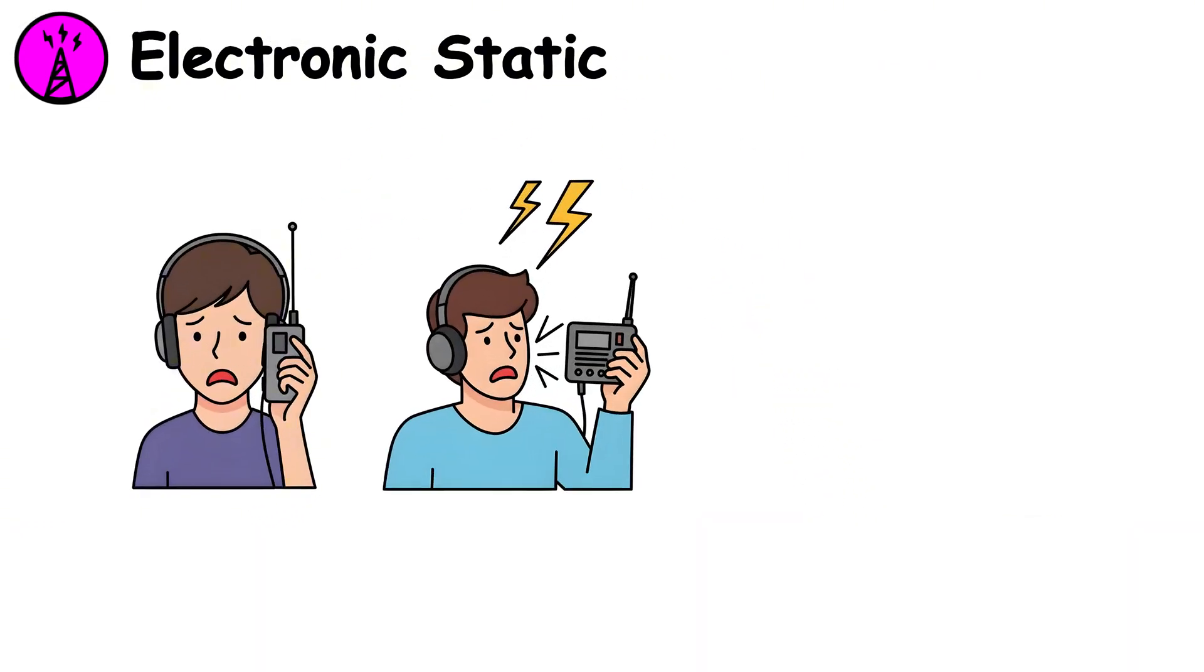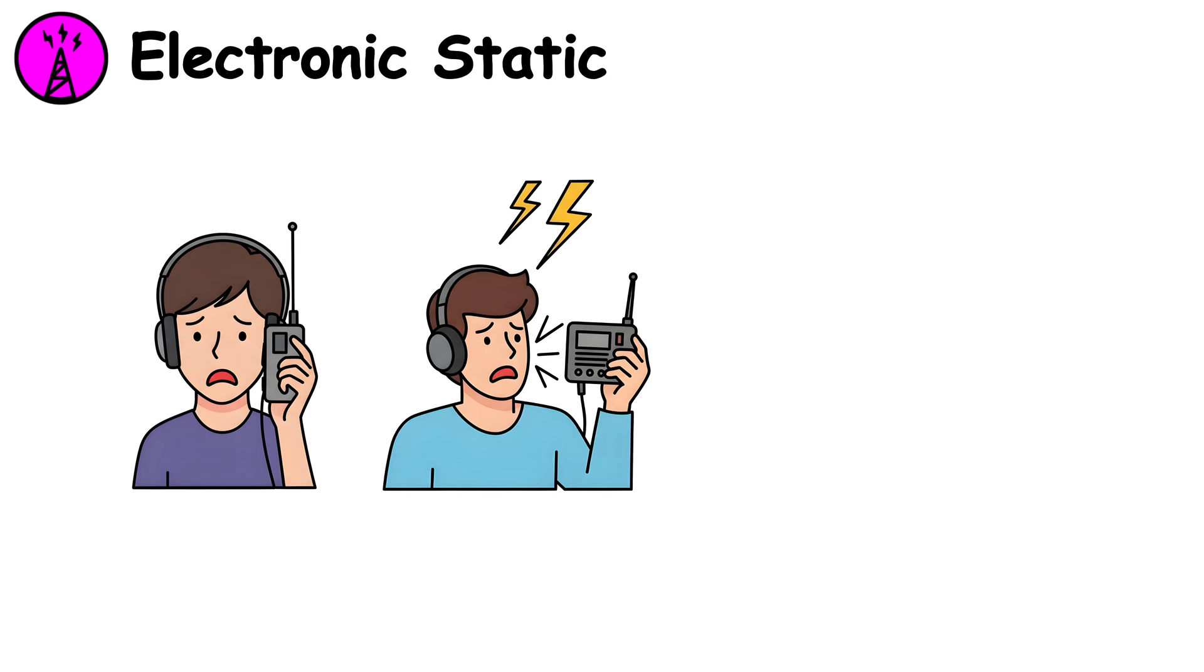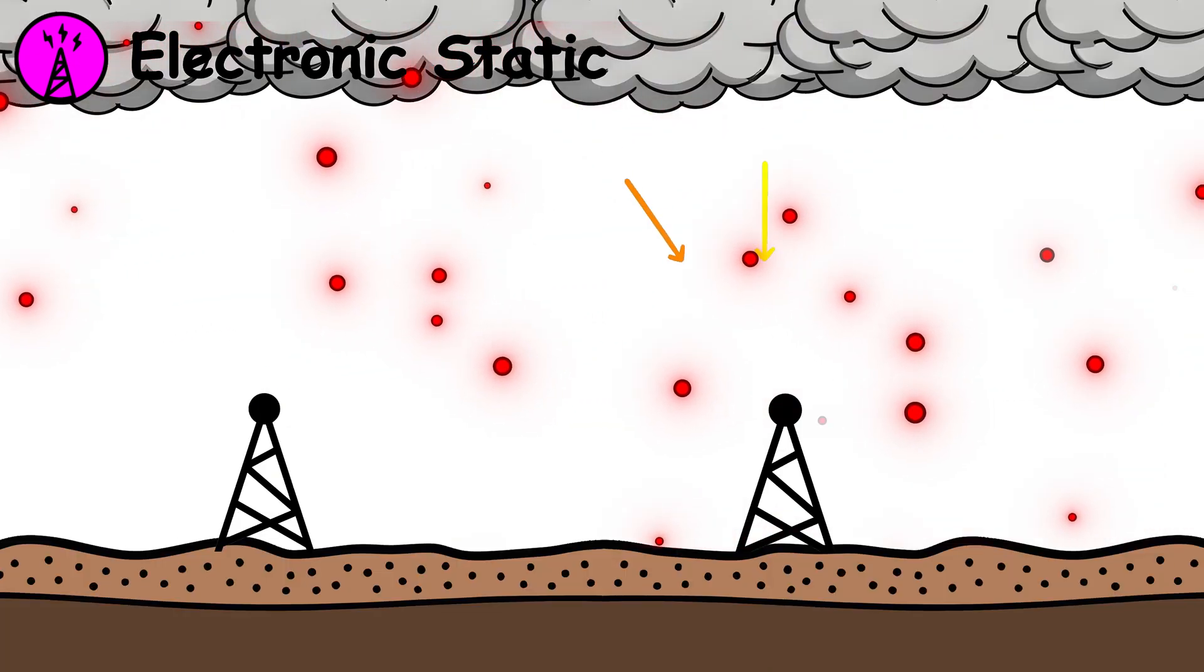The static you hear is the sound of the atmosphere's electrical chaos just before it releases energy. The stronger the interference, the closer the discharge source is.